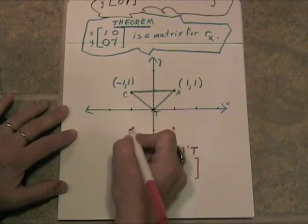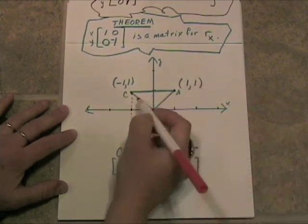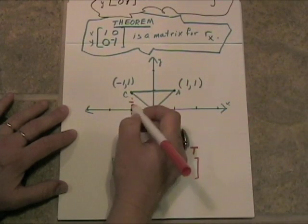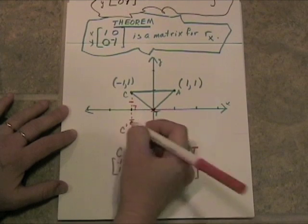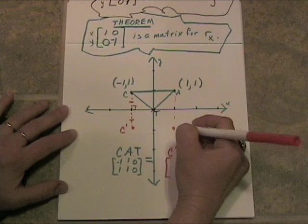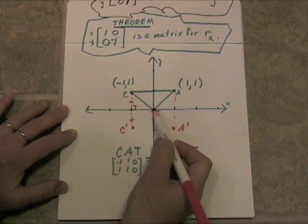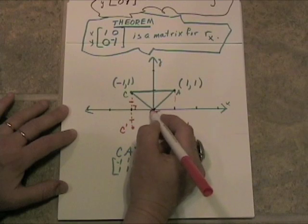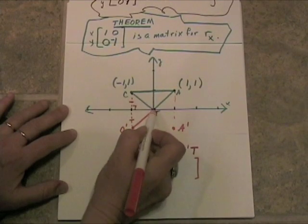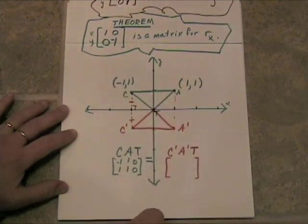Okay, so c prime is going to be right here because if we connect c to c prime that's going to be the same as that and it's going to be right angle. So there's c prime, and then you can see here of course a is going to come down here and this will be a prime, and you know t is right on the x-axis so we don't even need a t prime, it's just going to stay t and there we have a reflection over the x-axis.